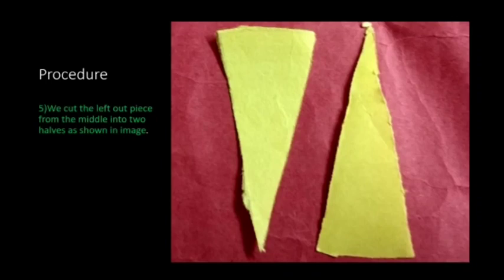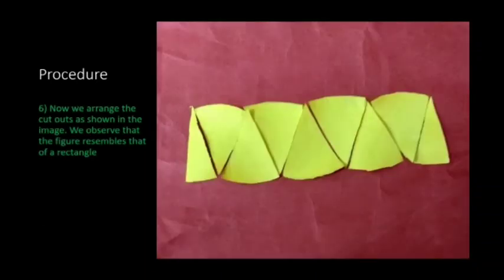The next step is we cut the leftover piece from the middle into two halves as shown in the image. Now we have to arrange the cutouts in the form shown in the image. We can observe that it resembles the structure of a rectangle.